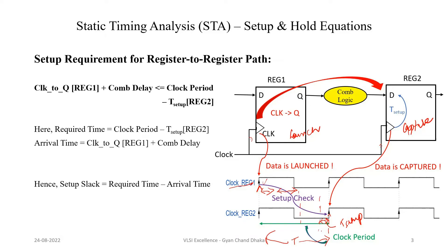T minus t_setup means the data launched from the launch flip-flop should reach at or before T minus t_setup. This is our setup requirement: clock-to-Q delay plus combinational delay should be less than clock period minus t_setup. From this we can also determine the minimum clock period: clock period should be greater than clock-to-Q delay plus combinational delay plus t_setup. This gives us the minimum time period, or equivalently the maximum frequency, in order to meet the setup requirement.